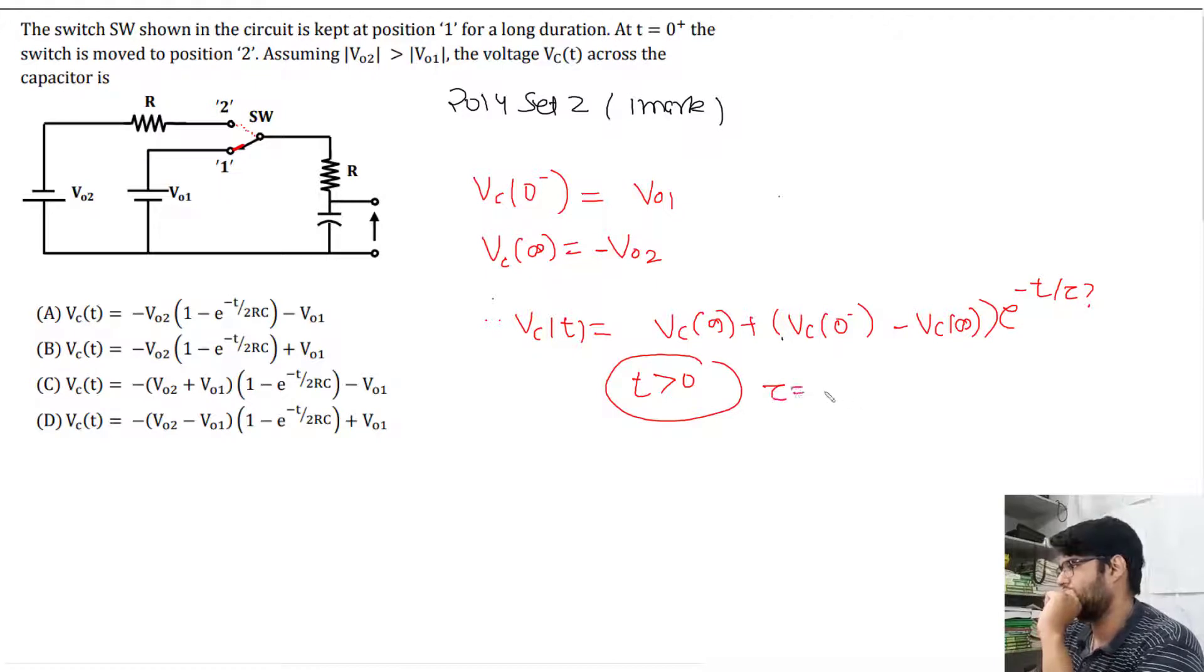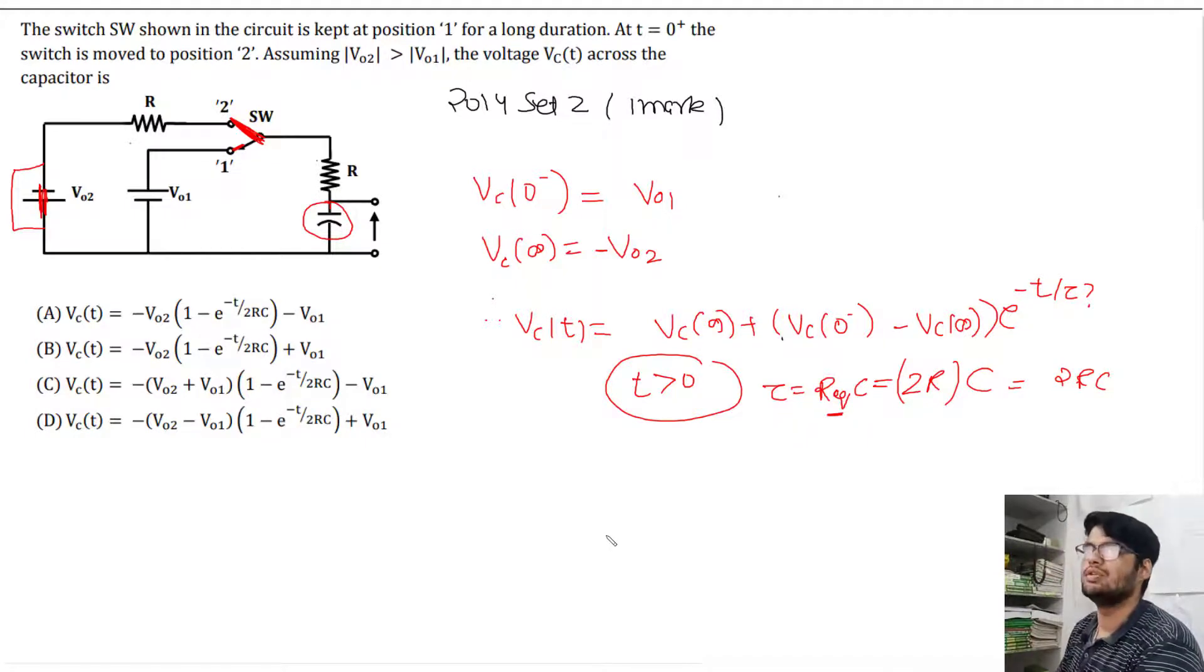Now, what is R equivalent? The equivalent resistance across the capacitor - we remove the capacitor and open the sources. The R equivalent comes out to be 2R.